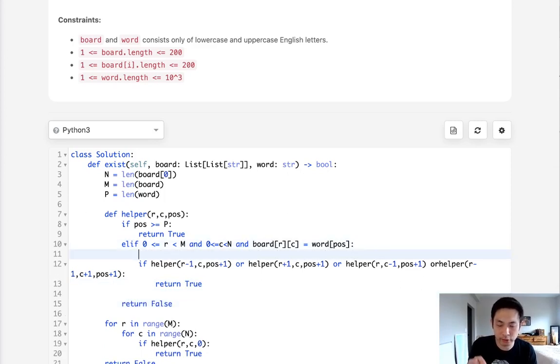As I said before, we need to mark this cell to say that we've already visited here before. Not only that, once we're finished with this recursive part we have to backtrack it and revert it back to whatever it was before.